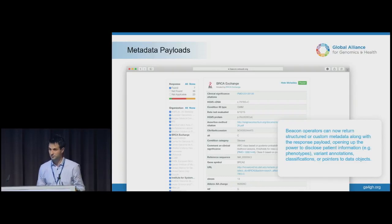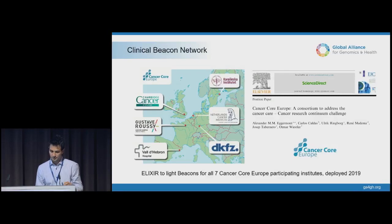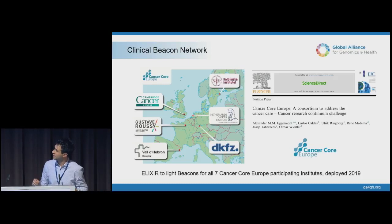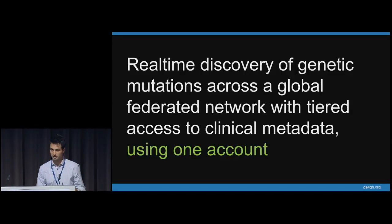So we went back to the drawing board and modified the beacon API so that the payload of the beacon response not only includes yes or no, but also useful clinically oriented metadata about that individual. In the latest version of the API, we adjusted a metadata construct that allows you to input both structured and custom metadata along with the resource payload, enabling the beacon to disclose patient information, phenotypic information, variant annotations, classifications, and pointers to data for use in a cloud workflow. Elixir is now deploying a clinical beacon network — a closed, controlled access network for oncology across seven different sites in Europe.